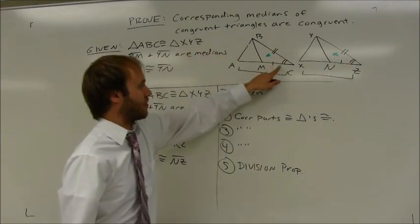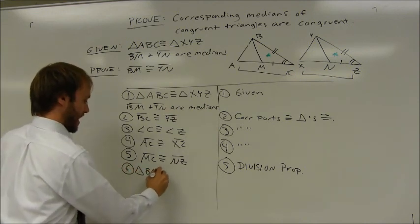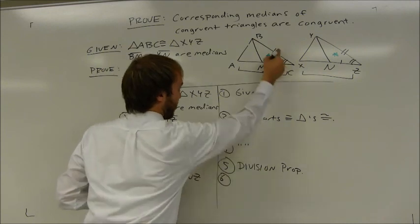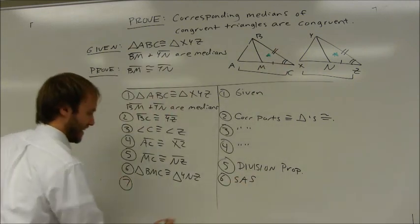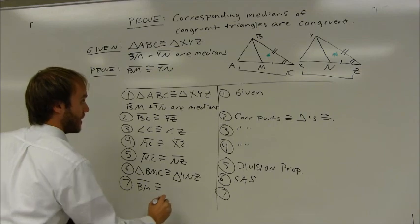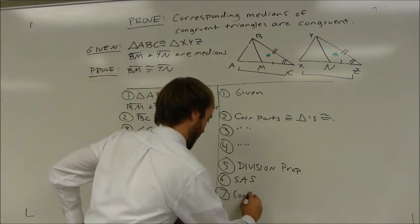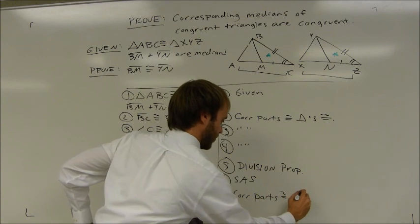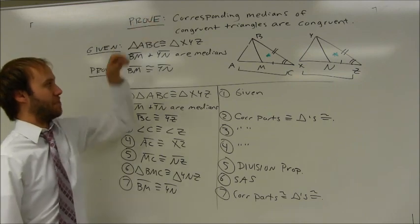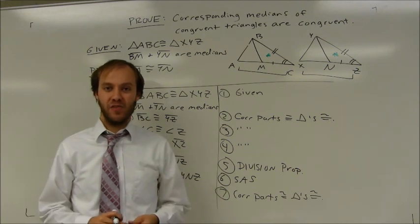Now I can prove my two triangles congruent by side-angle-side. Triangle BMC is congruent to triangle YNZ by SAS. And the last thing: I need to show that those medians are congruent. BM is congruent to YN because they are corresponding parts of congruent triangles. And now I've proved the original statement — corresponding medians of congruent triangles are congruent. If I want to, that's a theorem I can use in a proof in the future.